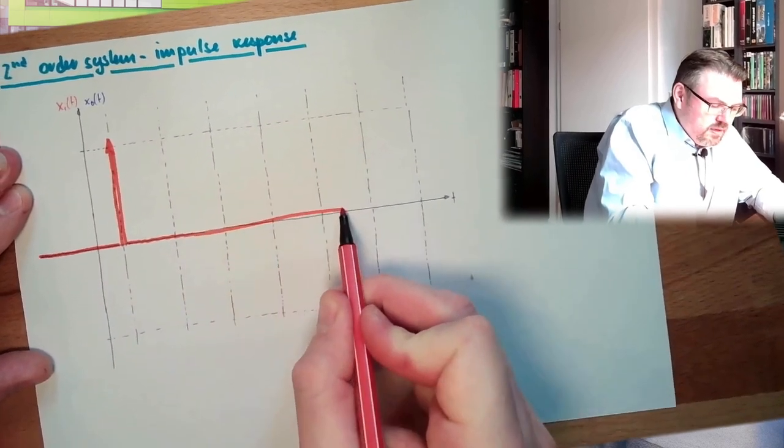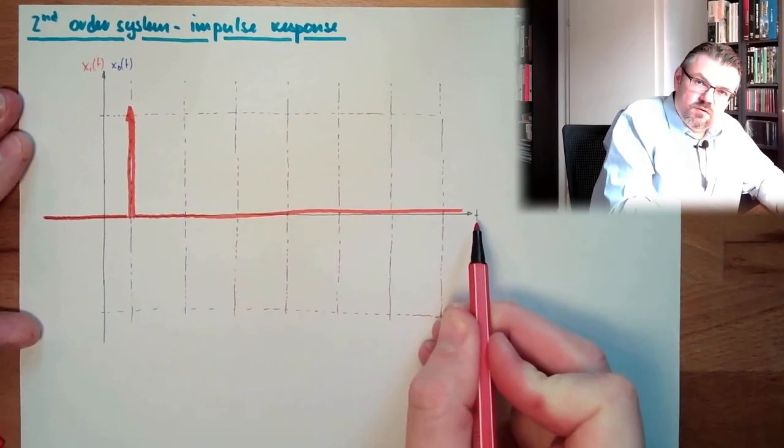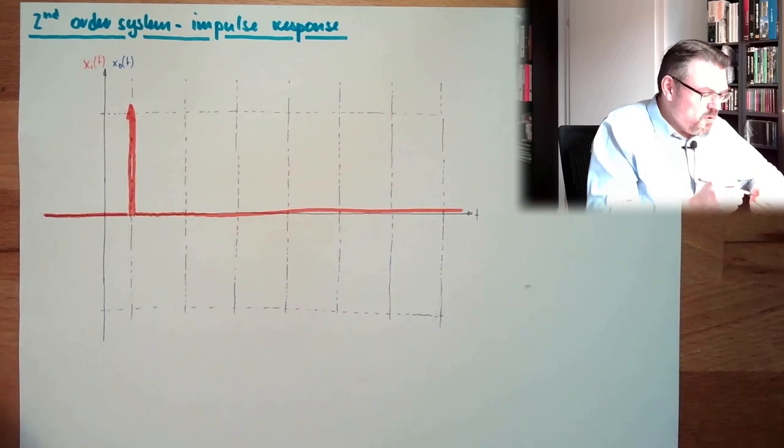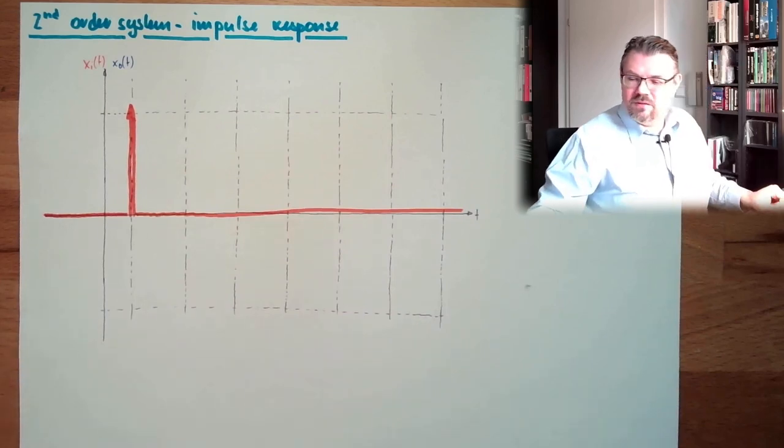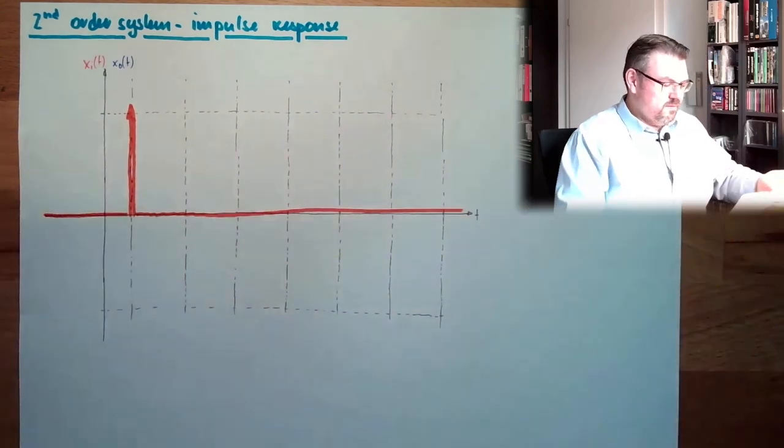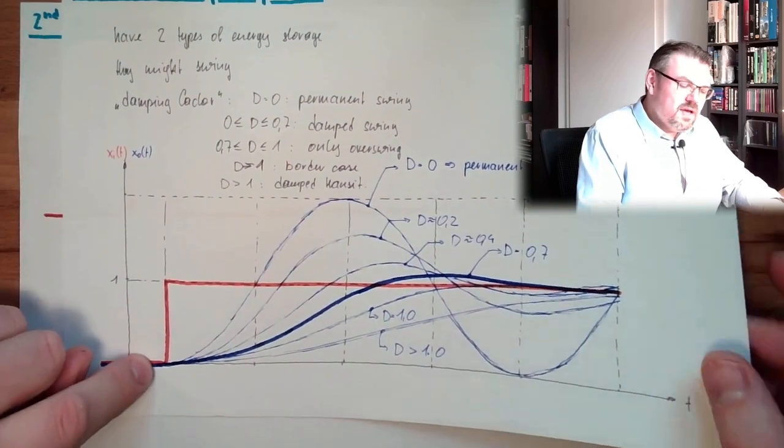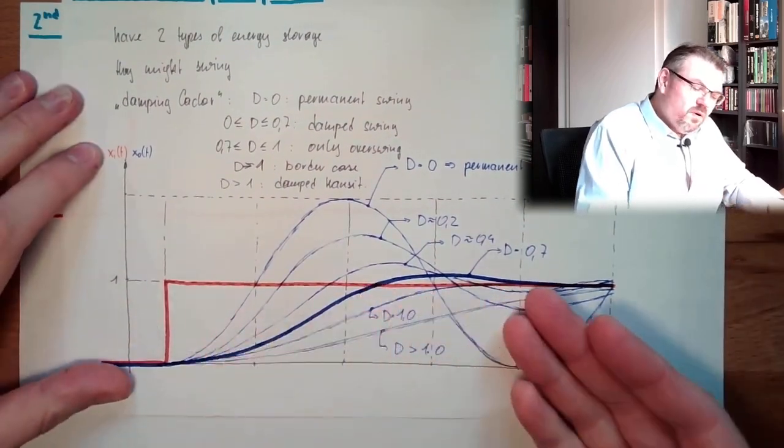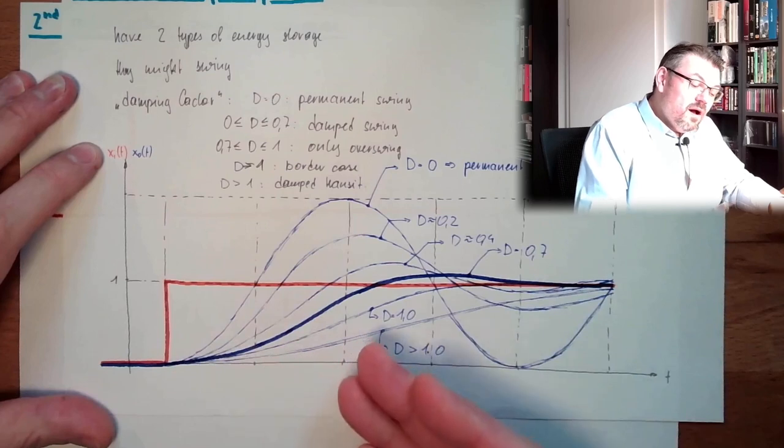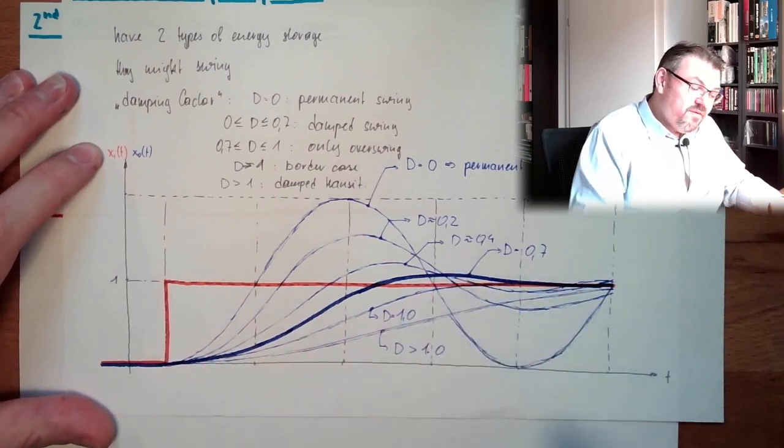Bigger impulse. And then it's zero again. What is our PT2 element doing here? This was the step response. And of course, in step responses, we had different damping factors.